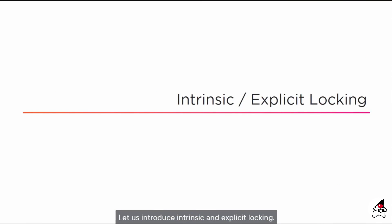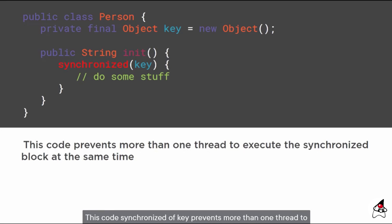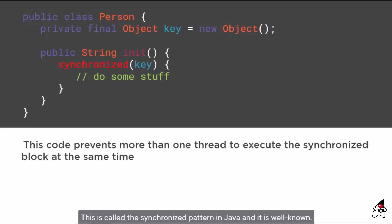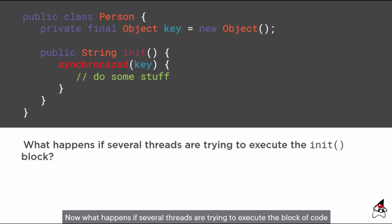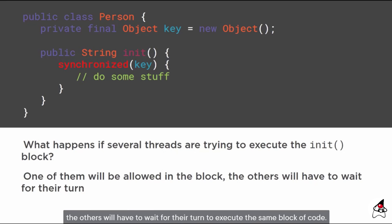Let us introduce intrinsic and explicit locking. If we want to synchronize a method, we can use a key object and place a synchronized block of code inside the method. The synchronized block prevents more than one thread from executing the guarded block of code at the same time. This is the basic synchronization pattern in Java.